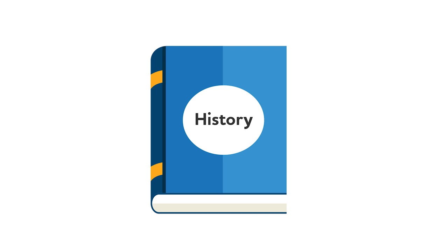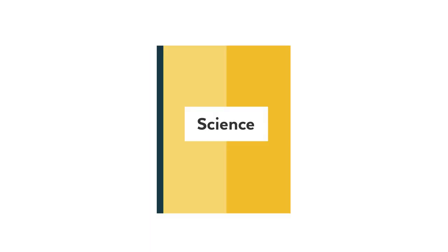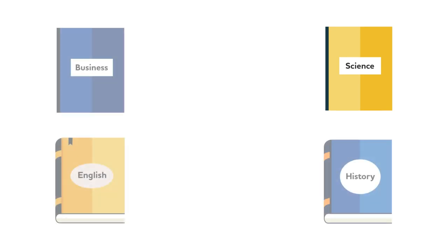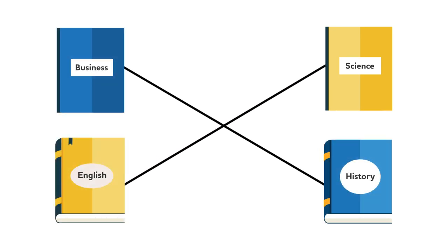A comprehensive university will have a list — a gen ed — that doesn't look super different than ours. You're going to take a history, an English, a science. But the difference at a liberal arts school is that our goal is to make connections between those subjects.